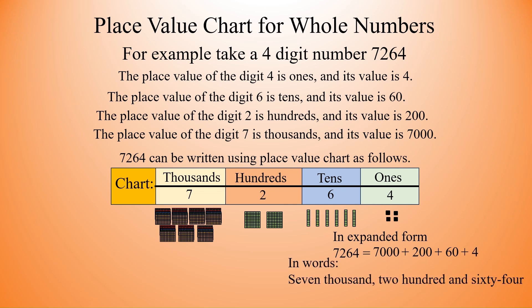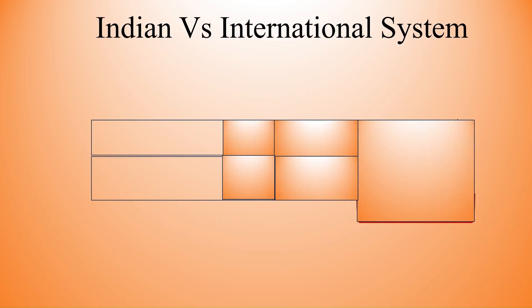Now in the expanded form, 7264 can be written as 7000 plus 200 plus 60 plus 4. And in words we can write it as seven thousand two hundred sixty-four. Next is Indian versus international system.